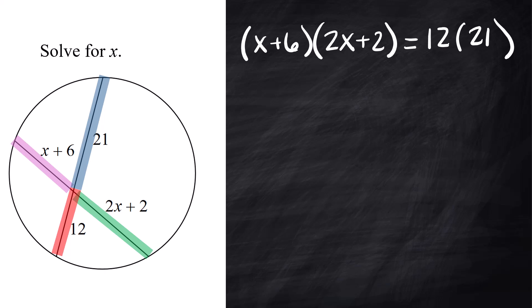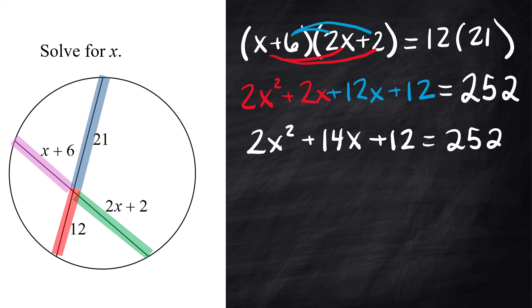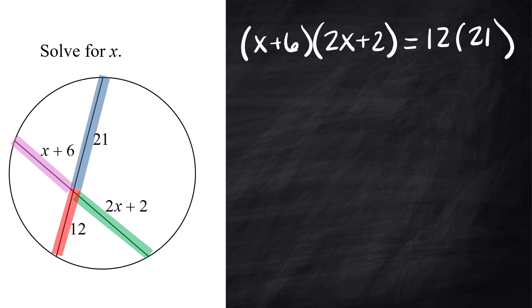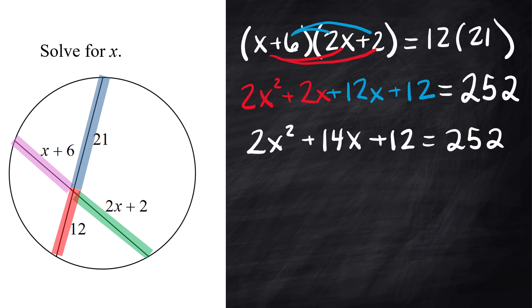I like to do something like, it's not exactly foil, but it's kind of this weird little distributive property thing I do. x times 2x is 2x squared. x times 2 is 2x. 6 times 2x is 12x. And 6 times 2 is 12. I'm going to simplify. I can combine the 2x and the 12x. And I'm at 2x squared plus 14x plus 12 equals 252.